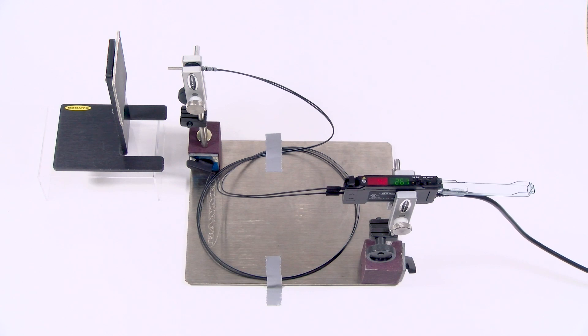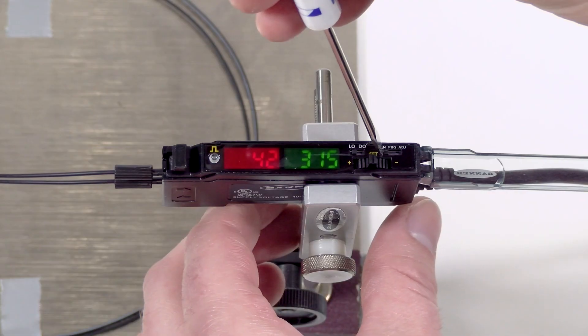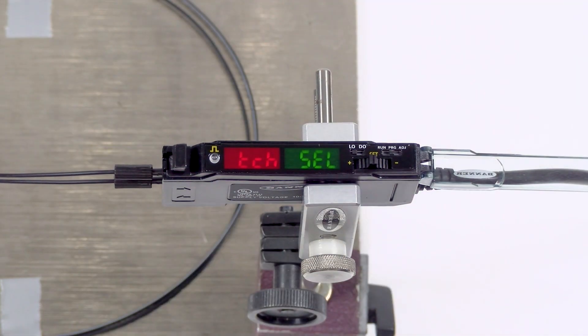For this demonstration we will begin by setting the amplifier back to factory default. Move the mode switch to PRG to access the program mode menu.